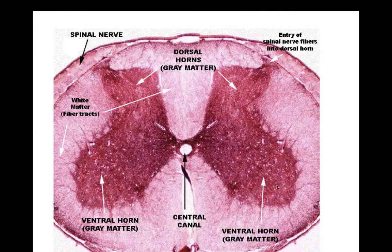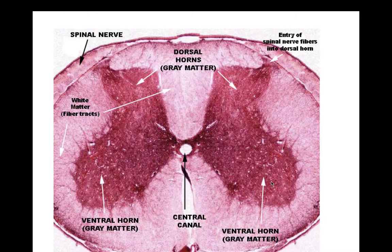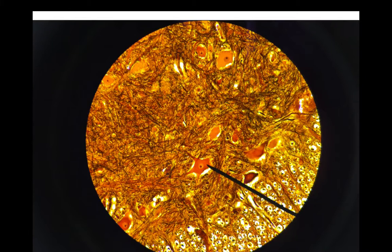The next slide is going to be showing you cells that are in the anterior or ventral horn. Remember, this is gray matter, so it is going to have lots of cell bodies — cell bodies of neurons. So what kind of neurons hang out and live in the ventral or anterior horn?